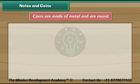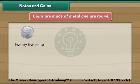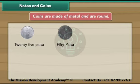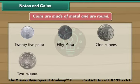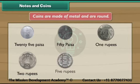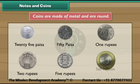Coins are made of metal and are round. There are 25 paisa, 50 paisa, 1 rupee, 2 rupee, 5 rupee and 10 rupee coins.